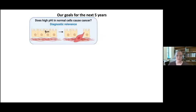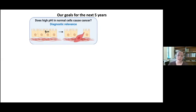We have a five-year plan to address key goals. For example, we know pHi correlates with cancer progression, but if we can prove that increased pHi is a driver of cancer development, we could measure pHi in otherwise healthy patients to diagnose and detect cancer earlier.